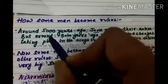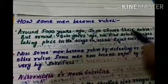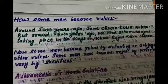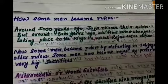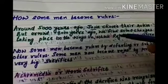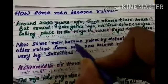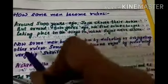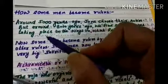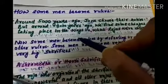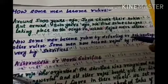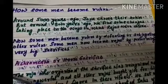Around 3,000 years ago, we find some changes taking place in the ways in which Rajas were chosen. Now some men became rulers by defeating or subjugating other rulers. People were attacking other rulers. Subjugating means attacking and bringing them under control. The picture you are seeing is of a fighting scene, defeating the rulers. The next picture is showing them attacking other rulers.